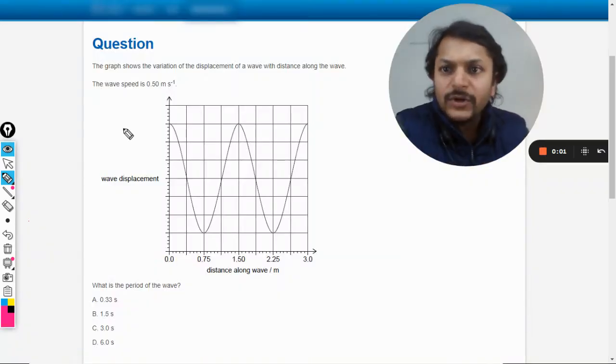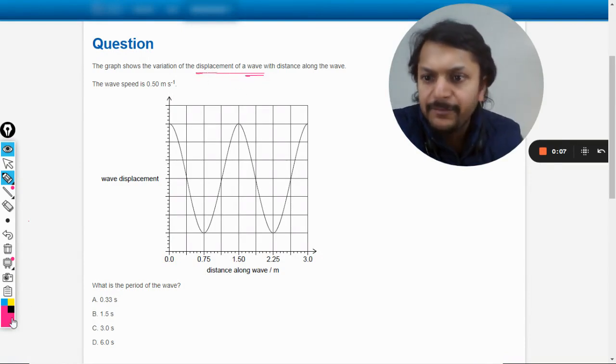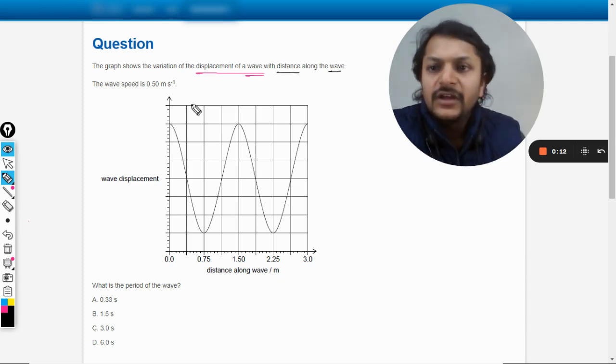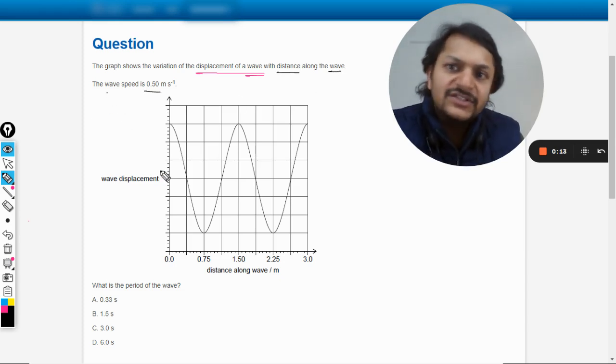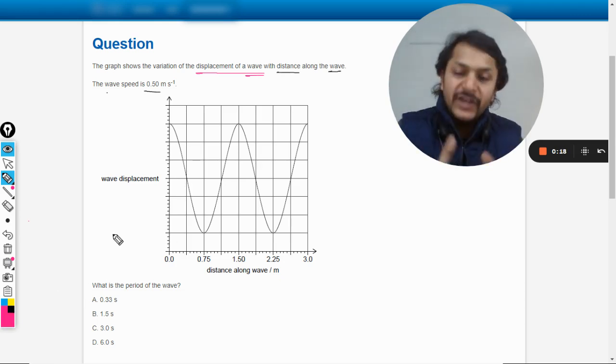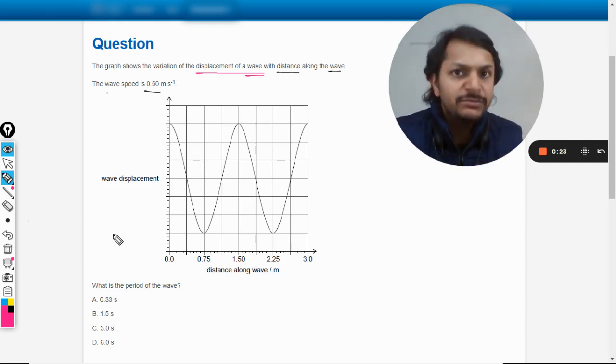Okay dear students, let us see what is there in this question. The graph shows the variation of displacement of a wave with distance along the wave. The wave speed is given as 0.5. So literally, they're talking about a wave, and as I have told you, there are two graphs possible when we talk about simple harmonic motion or waves.